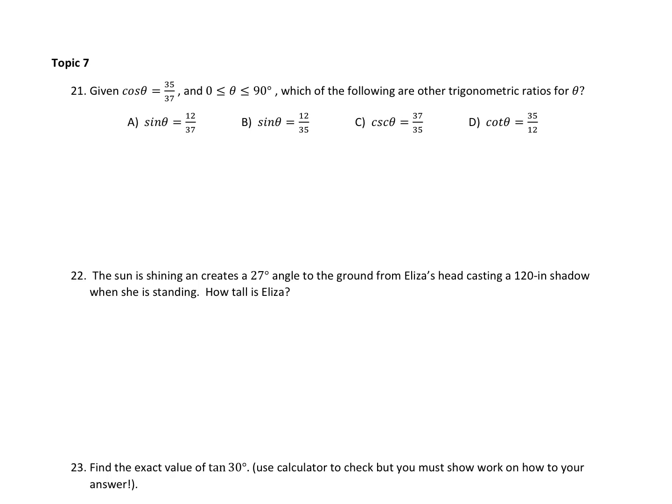We're moving on to topic seven, our trigonometry chapter. Number 21: given that cosine of theta is equal to 35 over 37, and theta is between 0 and 90 degrees, which of the following are other trigonometric ratios for theta?